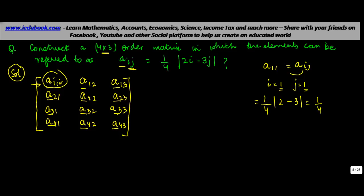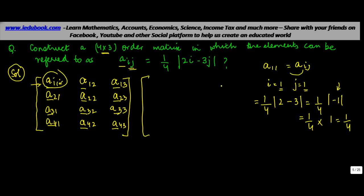We get (1/4)|−1|. Since the value coming out of the modulus must be positive, −1 becomes +1. So (1/4)×1 = 1/4. At position a₁₁, we write 1/4.